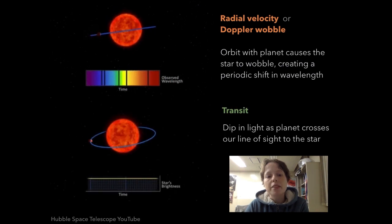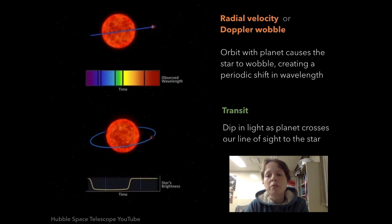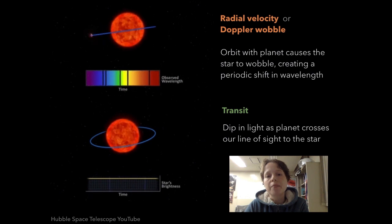The second main method for planet detection is the transit technique. Here, a slight dip in the star's brightness is detected as the planet passes in front of the star, as seen from Earth.